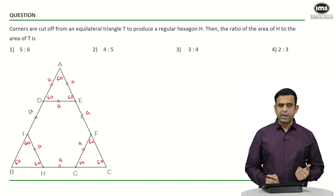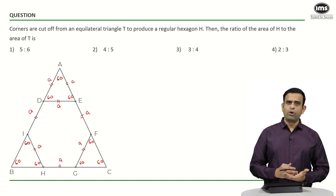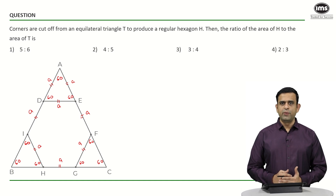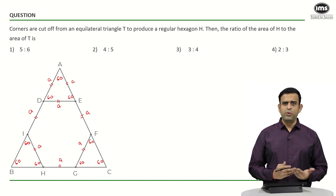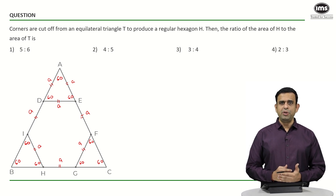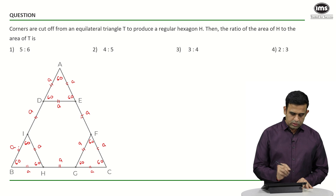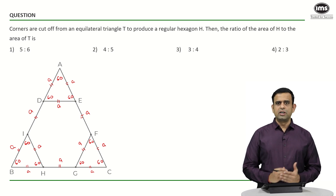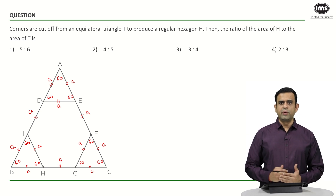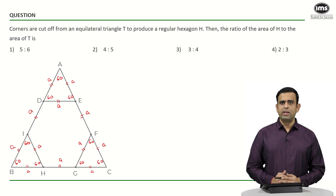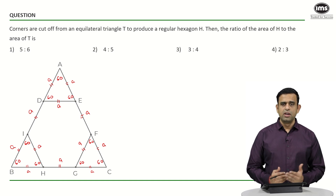Since the corner triangles — such as triangle BIH and CFG — also happen to be equilateral triangles with one side equal to a, the lengths CF and GC are also a. So the equilateral triangle ABC has a side length equal to three times a, i.e., 3a.